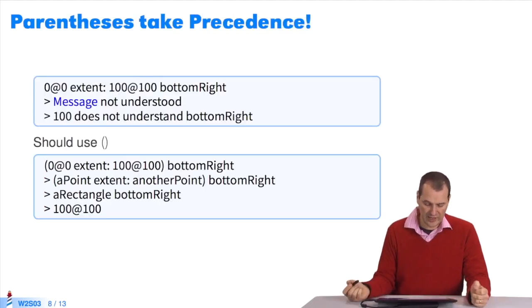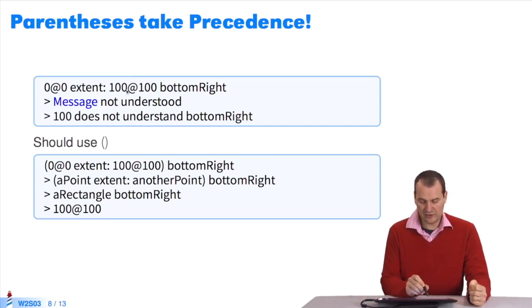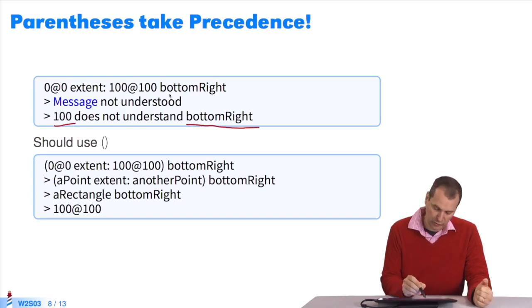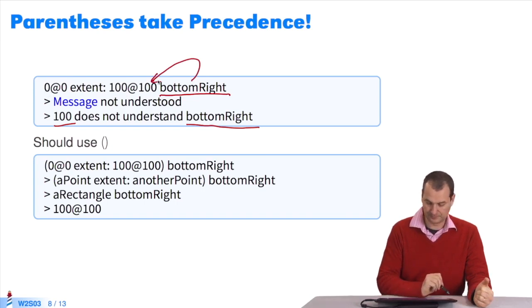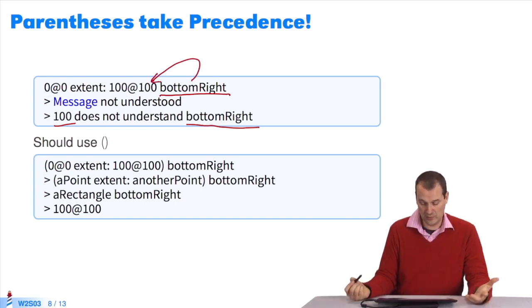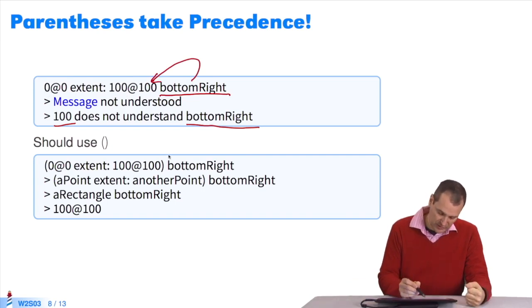Imagine that I created a rectangle. I want to get the point on the bottom right of the rectangle. I wrote this. It crashes when I execute it. The system doesn't understand. One hundred does not understand bottom right. Why? Because bottom right is a unary message. It gets executed before the others. It is sent to one hundred, its receiver. One hundred can't understand this API, as it is that of the class rectangle. I have to write parentheses, as I did in this expression. How does it work? What's between parentheses is executed first.